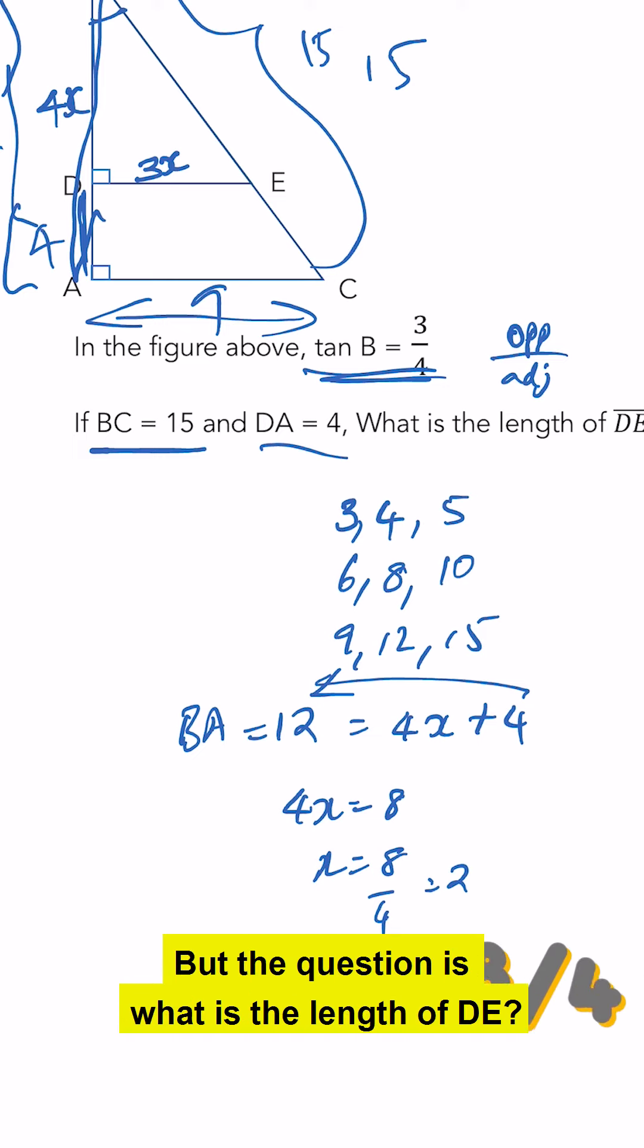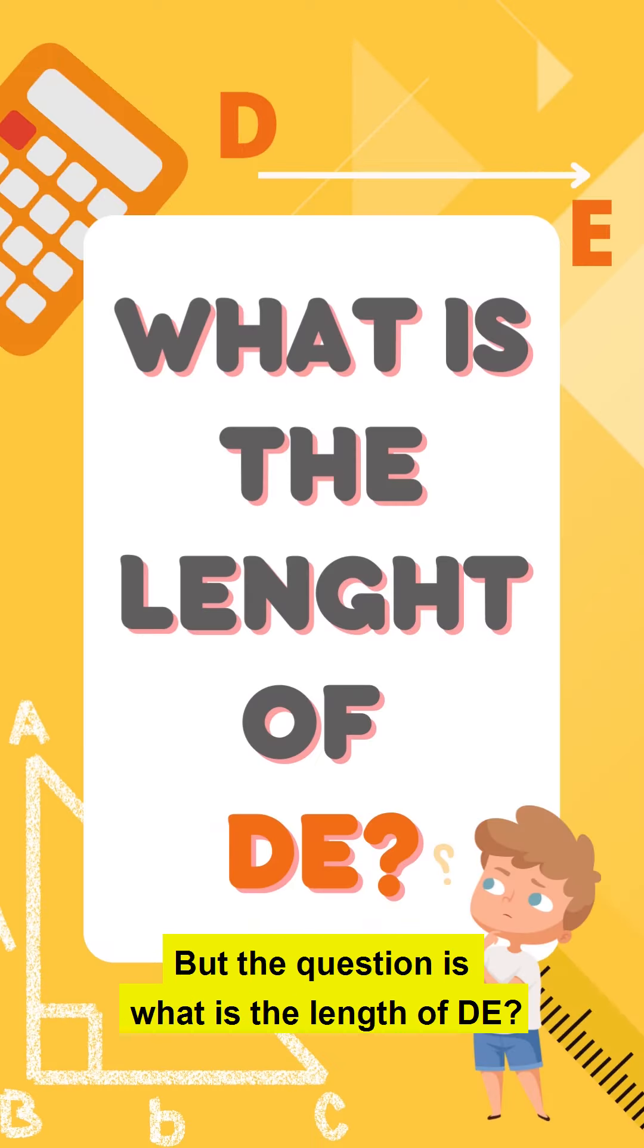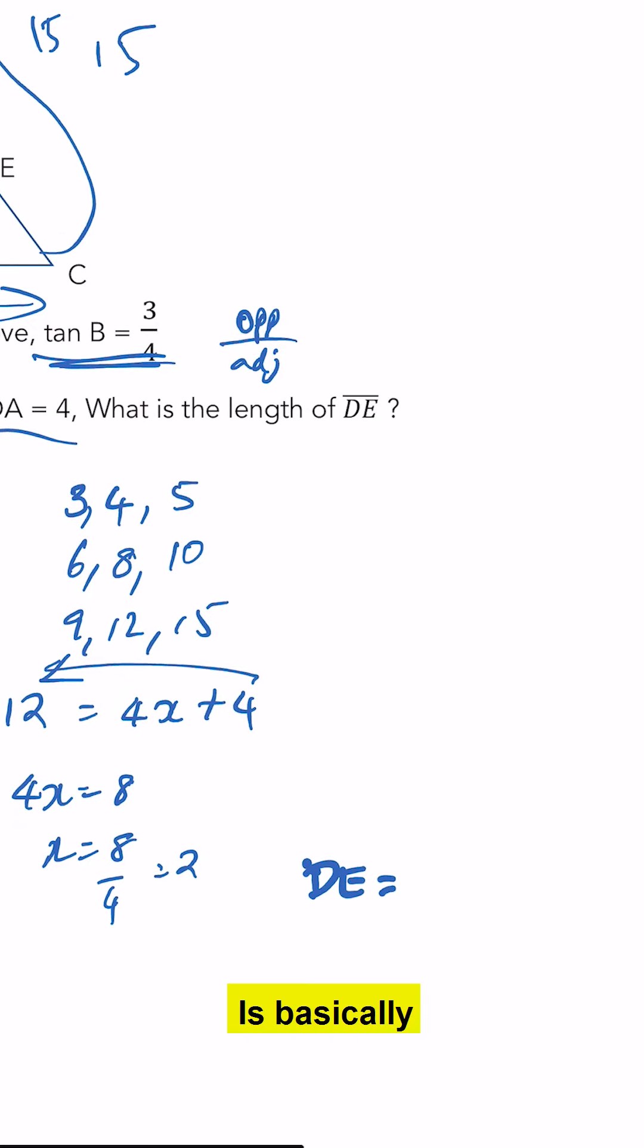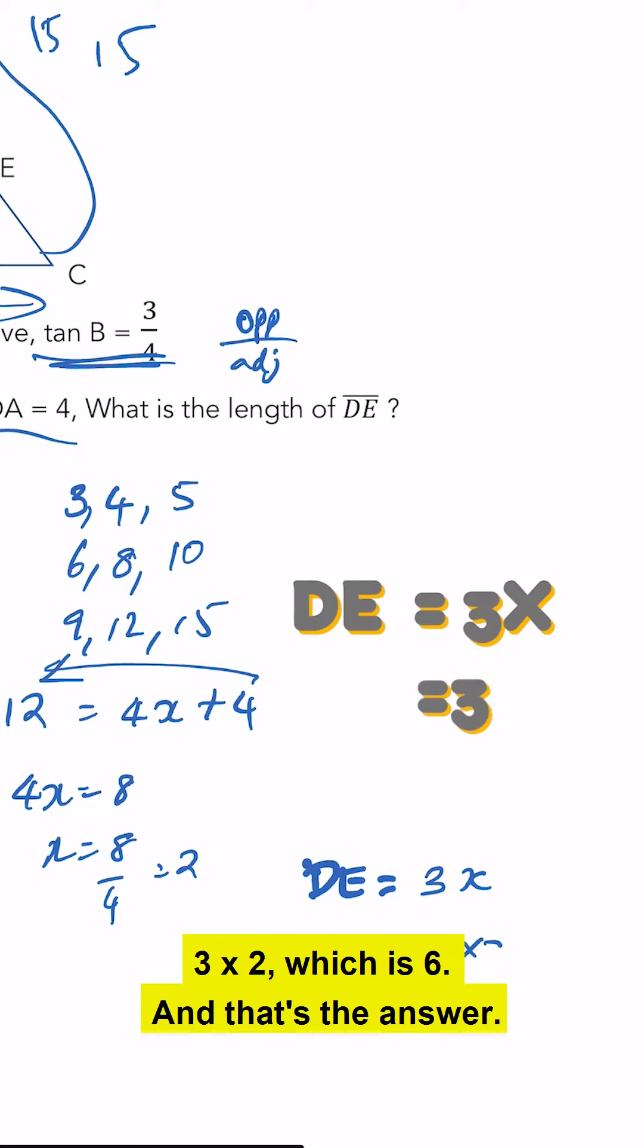But the question is, what is the length of DE? So DE is basically 3 times x, which is 3 times 2, which is 6. And that's the answer.